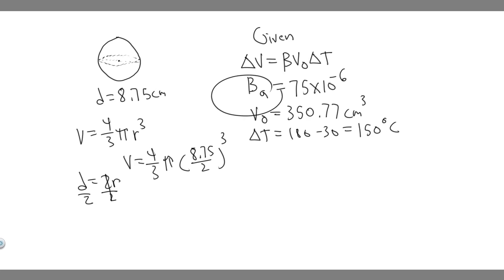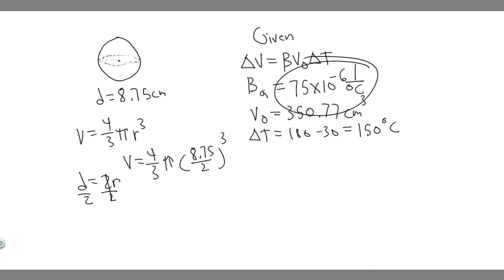Beta is the coefficient of thermal expansion — in this case it's the volumetric coefficient. We know that for aluminum, it's going to be 75 times 10 to the minus 6, and the units are inverse degrees Celsius. You can find this in your textbook; it's different depending on the material.